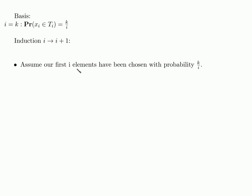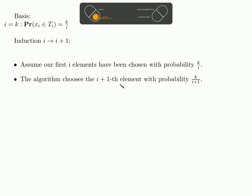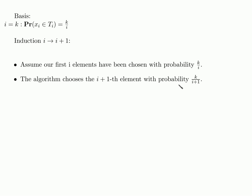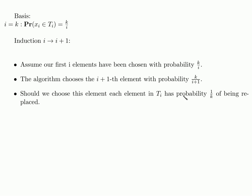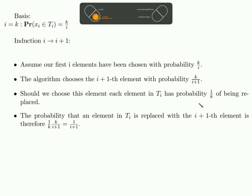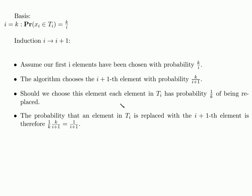Assume our first i elements have been chosen with probability k over i — this we also call the induction hypothesis. The algorithm chooses the i plus 1 element with probability k over i plus 1; this is just part of the algorithm. Should we choose this element, each element in ti has probability 1 over k of being replaced — again, just part of the algorithm. Now the probability that an element in ti is replaced with the i plus 1 element in the i plus 1 time step is therefore this probability times this probability.